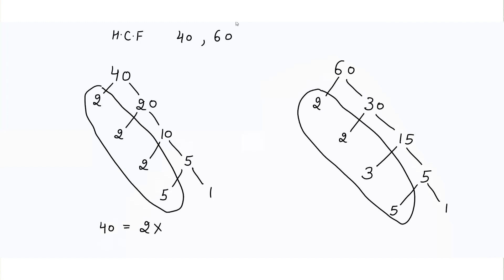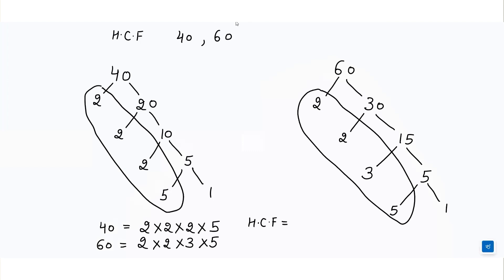So 40 can be written as 2 × 2 × 2 × 5, and 60 can be written as 2 × 2 × 3 × 5. The HCF will be found by identifying which numbers appear in both. This 2 is in both, another 2 is in both, and 5 is also in both. So we write 2 × 2 × 5. That means 4 × 5 = 20. So the HCF of 40 and 60 is 20.